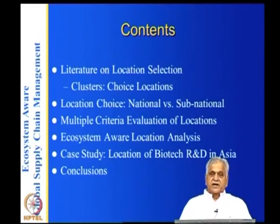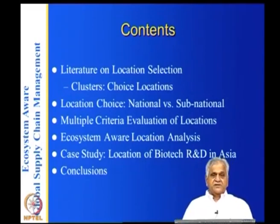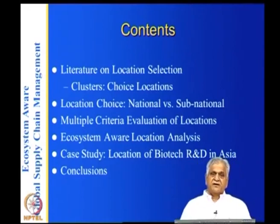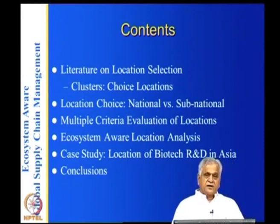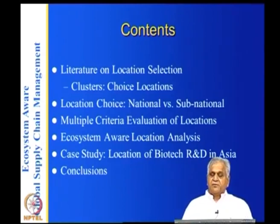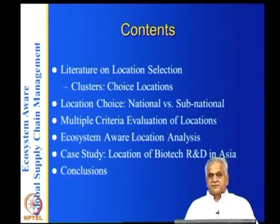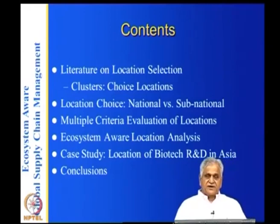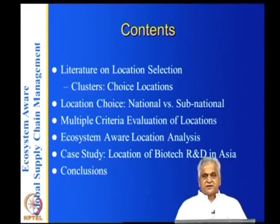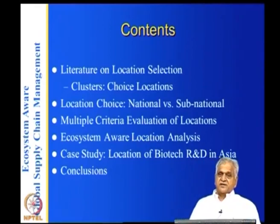That is where we look at ecosystem-aware location analysis. One technique called AHP — Analytical Hierarchy Process — is heuristic but widely used in practice for multi-criteria decision making. We will look at this for a biotech R&D example in Asia, where a company wants to locate its lab in Asia with three country choices: China, Singapore, and India. Once India is selected, the choices are Bangalore, Hyderabad, Lucknow, and Pune.